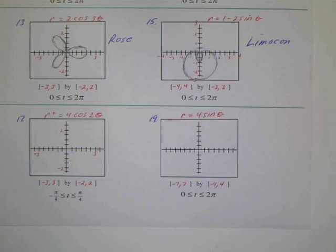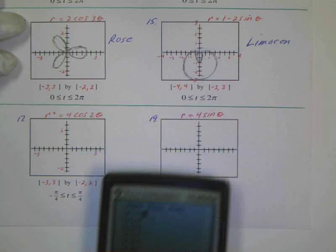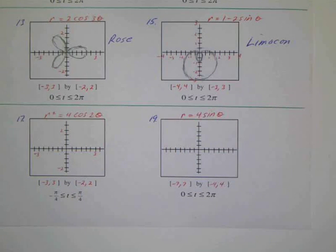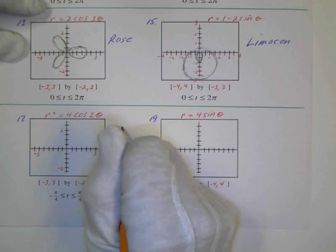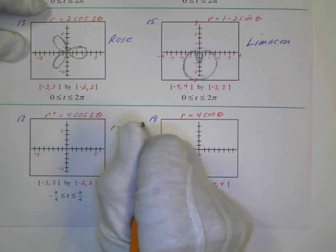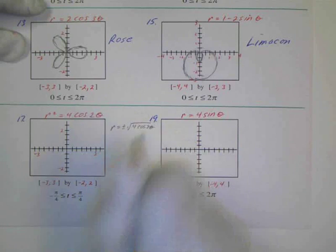So this is r squared equals 4 cosine of 2 theta, this is what we're going to be graphing in number 17. Now r will equal the square root, so if I solve this, I'll get r equals plus or minus the square root of 4 cosine of 2 theta.